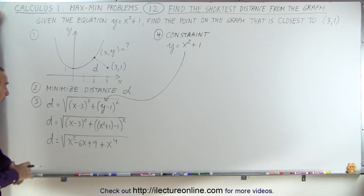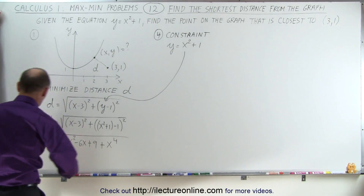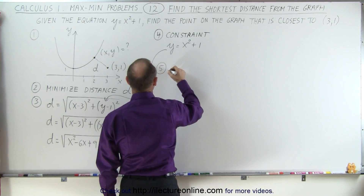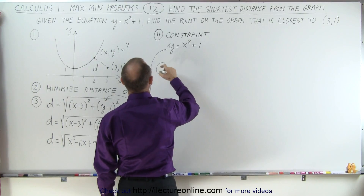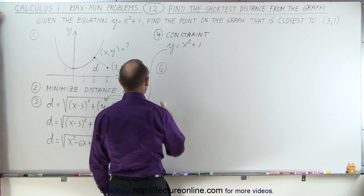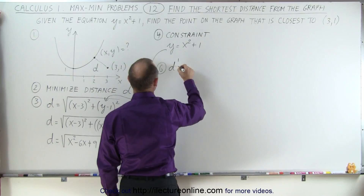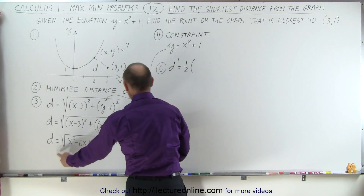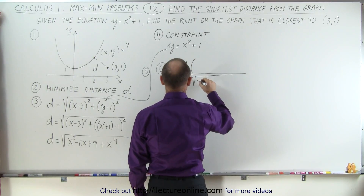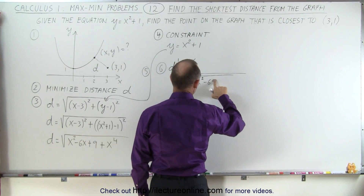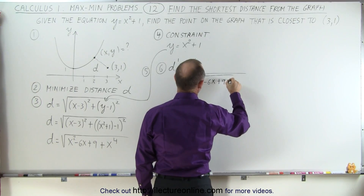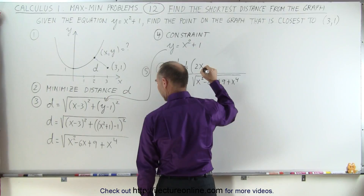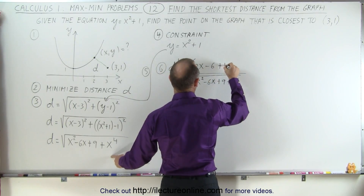Now we go to the next step where we take the derivative. Let's move over here for more room. Step 6: we take the derivative. d prime equals — we have the contents to the one-half power, so it's one-half times this quantity to the minus one-half power, which puts it in the denominator: the square root of x squared minus 6x plus 9 plus x to the fourth power. Then times the derivative of what's inside, which gives us 2x minus 6 plus 4x cubed in the numerator.